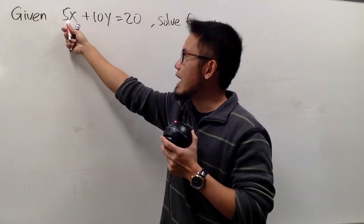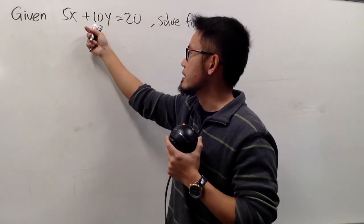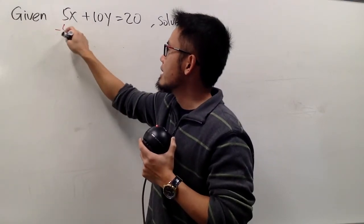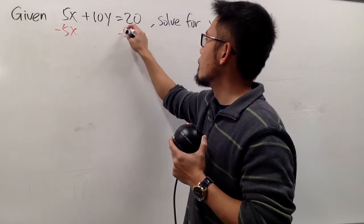So with that being said, we see that we have 5x on the same side as the 10y, we have to get rid of the 5x first. We can do so by minus 5x on both sides.